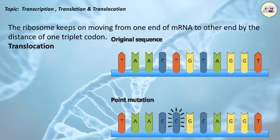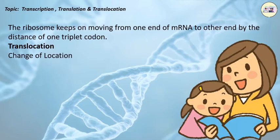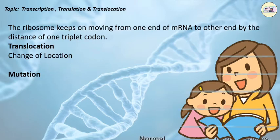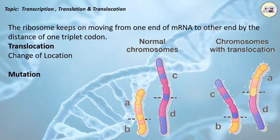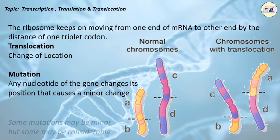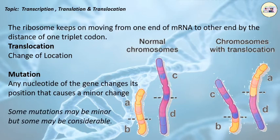Translocation can be remembered as the change of location, hence translocation. We have certain characters like our parents, but we as their children are not exactly the same — certain characters are different. This happens due to the concept of mutation. Sometimes, any nucleotide of the gene changes its position, causing a minor change, which is nothing but mutation. Some mutations may be minor, but some may be considerable.